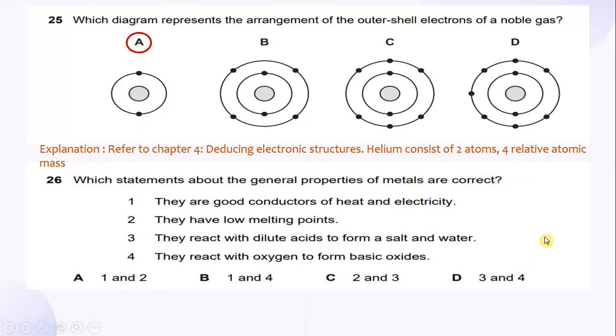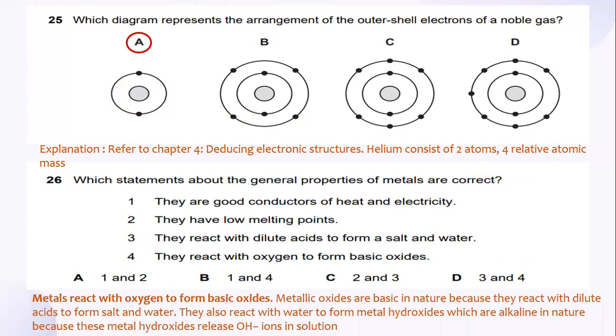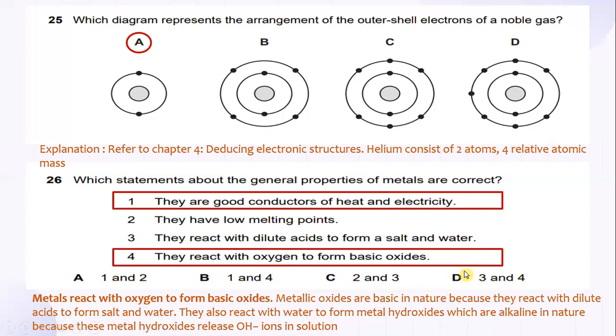And which statement about the general properties of metals are correct? Metals react with oxygen to form basic oxide. Metallic oxides are basic in nature because they react with dilute acids to form salt and water. They also react with water to form metal hydroxide, which are alkaline. And in nature, because this metal hydroxide release OH ion in solution. So, let's look into the statement one. They are good conductors of heat and electricity, yes. And they also react with oxygen to form basic oxide. So, the answer is B.